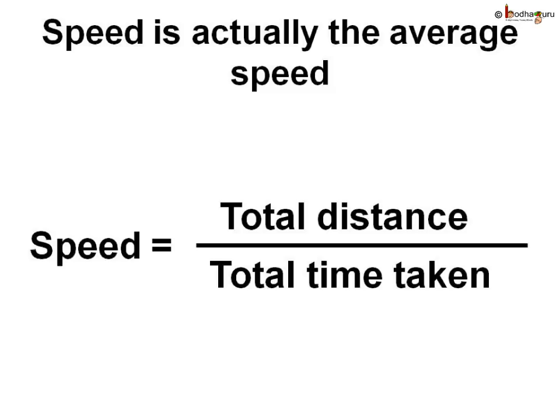When we say the speed of the train is 60 kilometers per hour, it means it will cover a distance of 60 kilometers in one hour. But a train does not move with a constant speed for an hour — it will start slowly and then pick up speed. So when we say the speed is 60 kilometers per hour, we consider only the total distance covered in one hour. The speed we calculate is actually the average speed, which is total distance covered divided by total time taken.